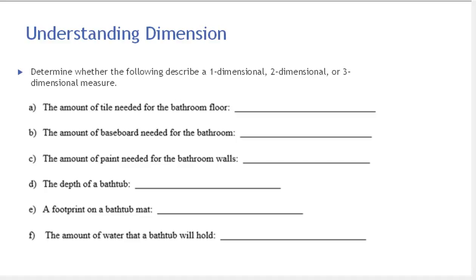In this video we're going to talk about understanding dimensions — determining whether something describes a one-dimensional, two-dimensional, or three-dimensional measure. Let's start by talking about the different types of measure.